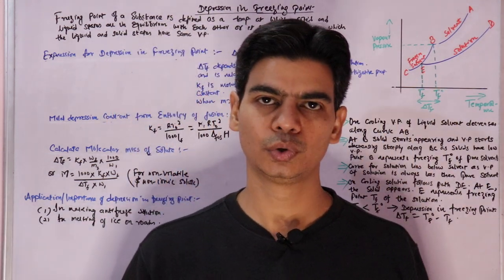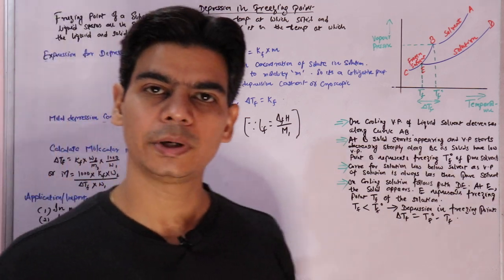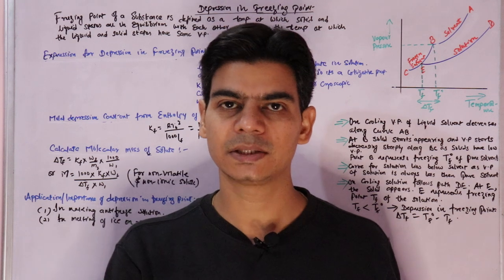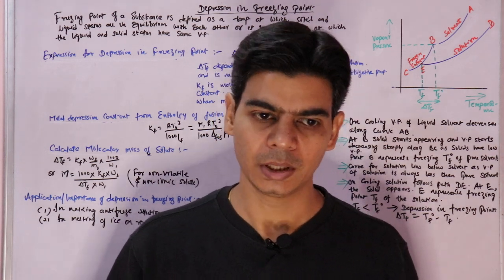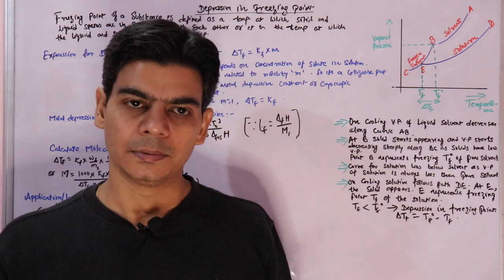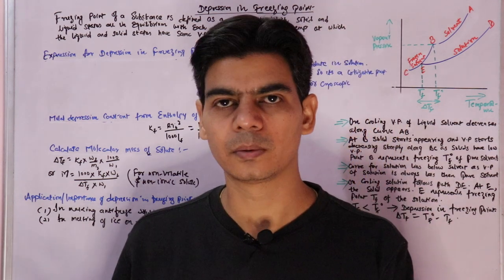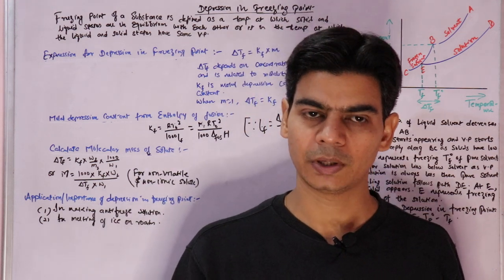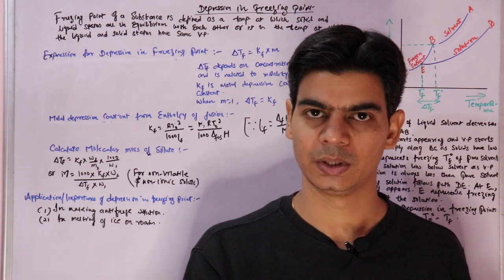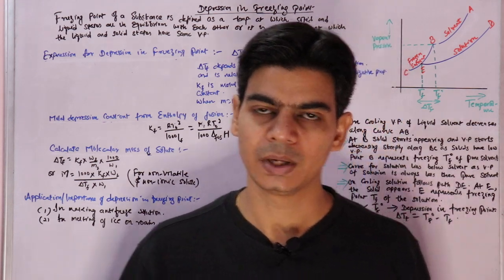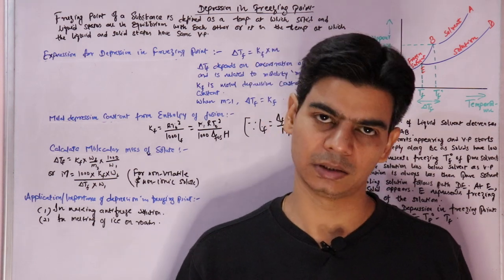In this video lecture we will go through our third colligative property: depression in freezing point. The freezing point is the temperature at which the liquid form changes into the solid form. Depression in freezing point is the further decrease in the freezing point of the solvent. This is a colligative property, meaning it depends upon the number of solute particles added.